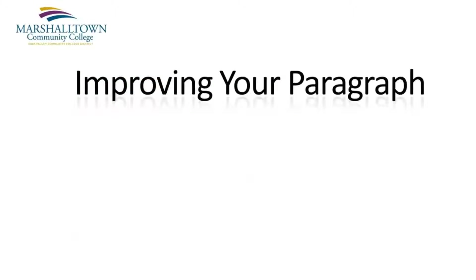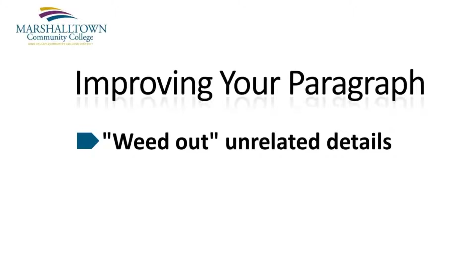One way to make your paragraph more concise is to simply delete, or as I like to say, weed out, any details that are not directly related to the topic sentence of your paragraph. As you start doing more writing, you'll discover that in the early stages of composition, it's easy to drift from your main topic. This is not really a problem in the beginning stages of your first draft, because it's always good to get a lot of ideas down on paper as quickly as you can. Just keep in mind that later on, you'll probably want to weed out some of these ideas to make your paragraph more concise.